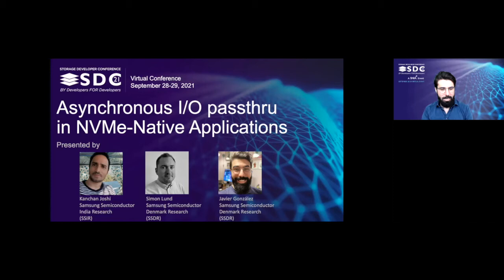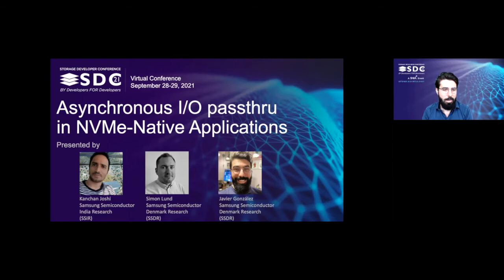Hi everyone, and welcome to our session. Today, Canson, Simon, and myself are going to talk about some of the work we're doing in Linux mainline to enable a new high-performing IO path that we're calling a synchronous IO path server. We're going to cover what we mean by this, the use cases we're after, and then deep dive into the changes we're making in Linux and in other places in the storage stack to enable this path.